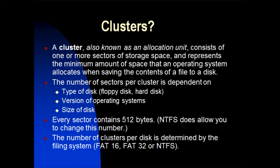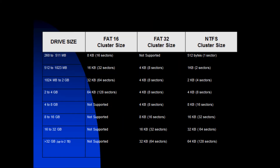Clusters. A cluster, also known as an allocation unit, consists of one or more sectors of storage space and represents the minimum amount of space that an operating system allocates when saving the content of a file to a disk. The number of sectors per cluster is dependent on the type of disk, version of operating system, and the size of disk. Each sector contains 512 bytes, and the number of clusters per disk is determined by the file system. This table shows the cluster sizes for FAT16, FAT32, and NTFS.